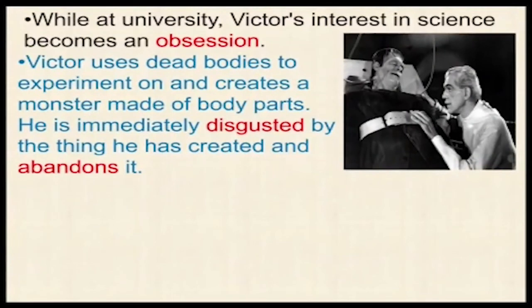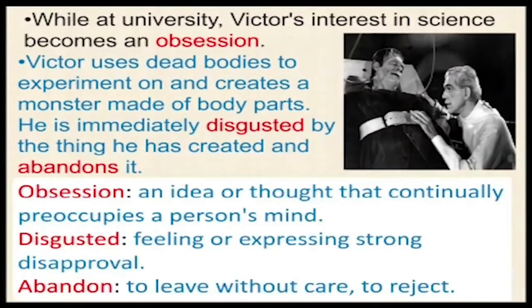While at university, Victor's interest in science becomes an obsession — meaning an idea or thought that continually preoccupies a person's mind. Victor uses dead bodies to experiment on and creates a monster made of body parts. He is immediately disgusted, expressing strong disapproval of his own creation, and abandons and rejects it, leaving the thing he has created without any care.